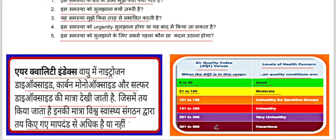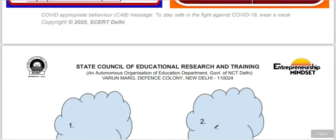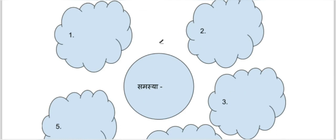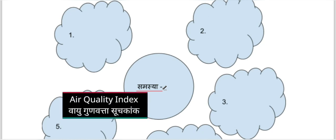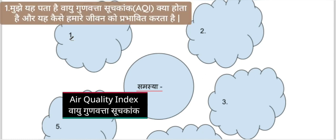You can see how serious a concern this is. Moving ahead, you have been told to draw a similar diagram in your notebook. In the middle circle you will write the problem: Air Quality Index — Vayu Gundvatta Suchkank. For the first question, what do you already know about this problem right now — you can write what the Air Quality Index is and how it affects our lives.